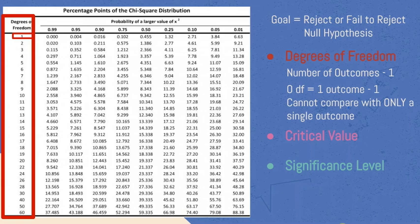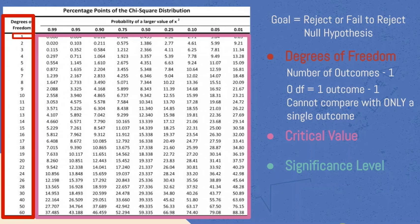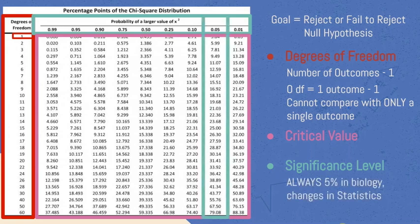Now the critical value comes from looking at the column, where our degrees of freedom are, and matching them with our significance level, our probability from our first row. For biology, our significance level is always 5%, but in statistics, that can sometimes change depending on the scenario presented.